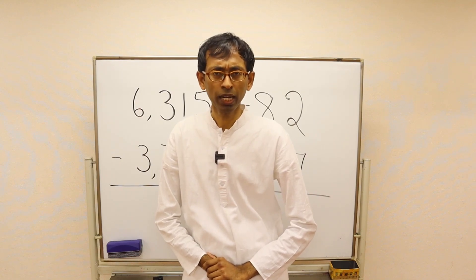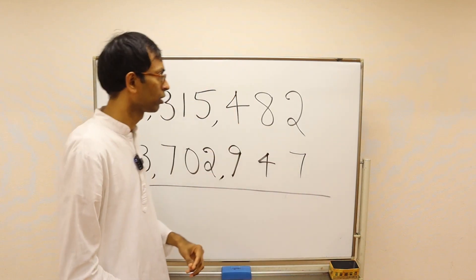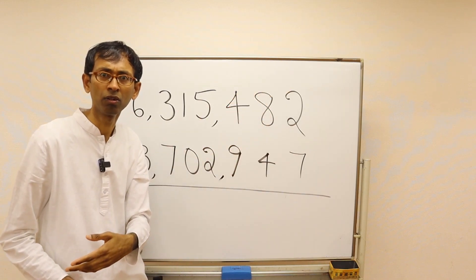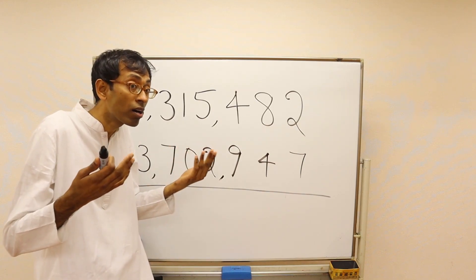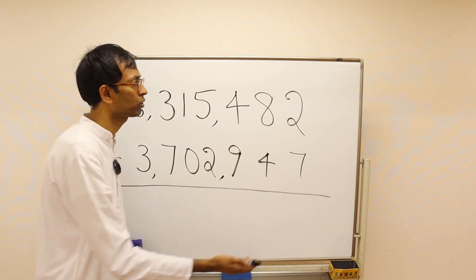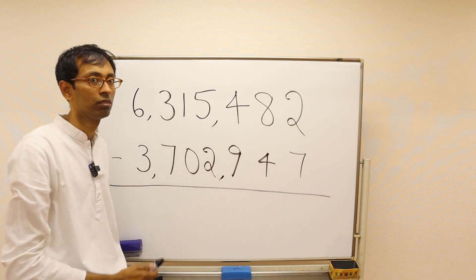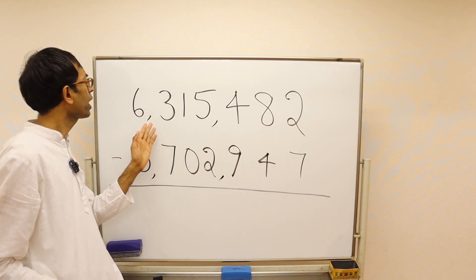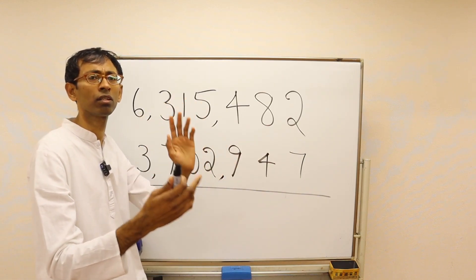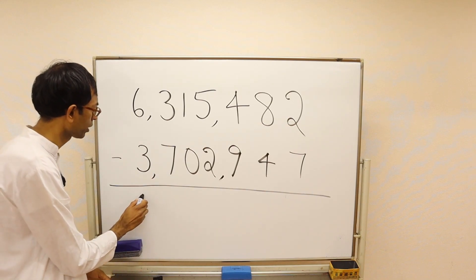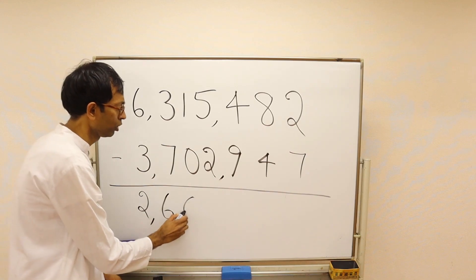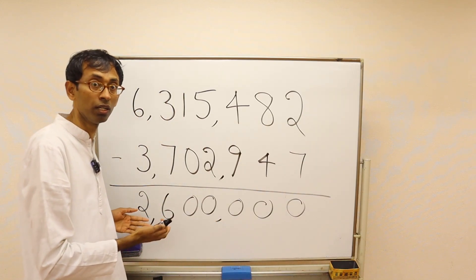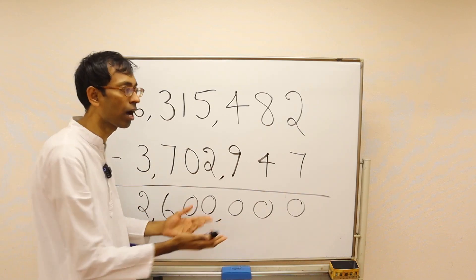Are you wondering why we should learn subtraction from left to right? Suppose we have a huge subtraction problem — a few millions here and a few millions there. If you need an approximate answer and you start from the right, it takes a long time. Instead, just subtract the first two digits: 63 minus 37 is 26. You approximate the remaining digits to zero, and the answer is two million six hundred thousand — as simple as this.